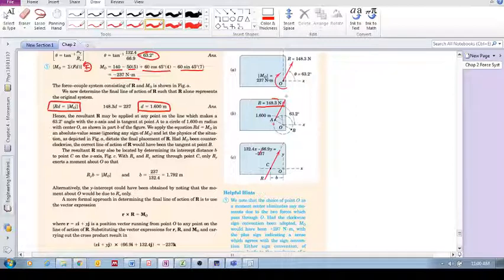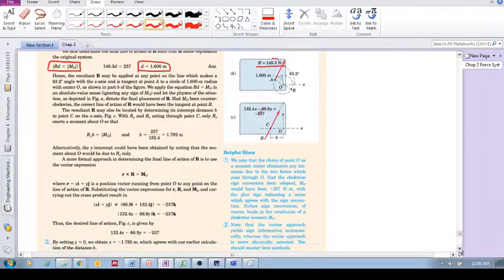We can actually calculate this equation of this line of action and then that equation will allow us to find any point on this line of action where we can apply this force of 148.3 to give us the same equivalent net external effect. So how would we do that?